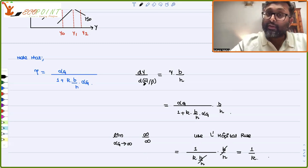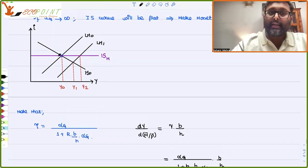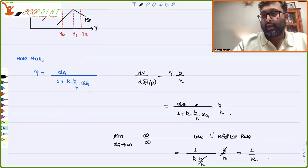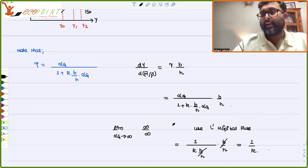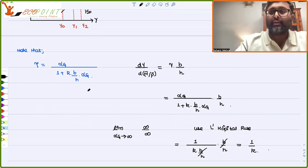So, this is going to be the maximum value of the monetary policy multiplier. So, the main idea is that you have to understand that monetary policy is going to be extremely effective if IS curve is flatter. And this is going to be the maximum value of the monetary policy multiplier. I hope it was useful to you. Thank you.